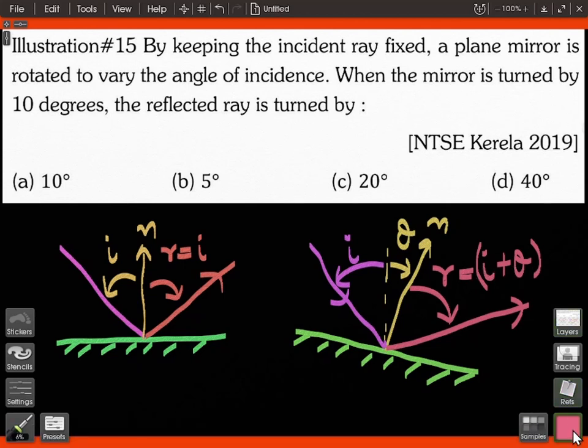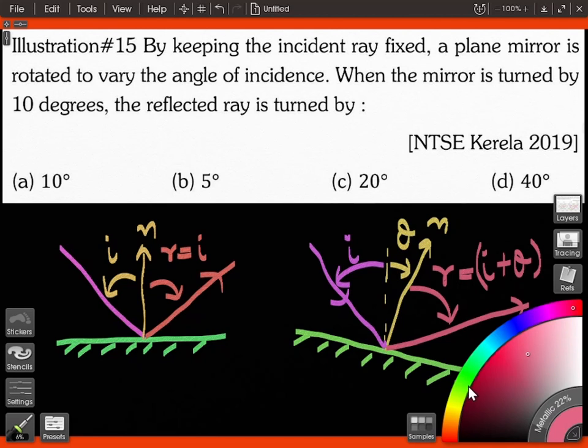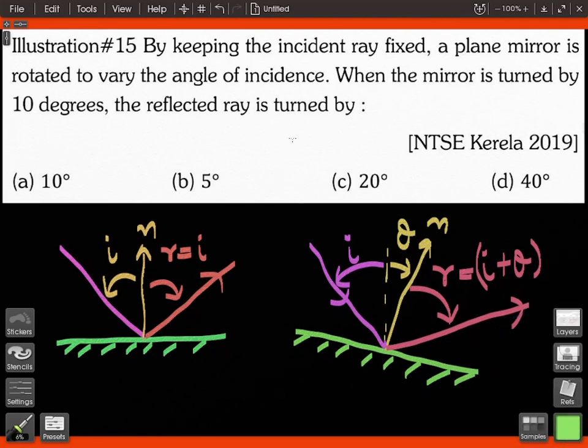So you can see the new ray has come out at an angle r equal to i plus theta. If you look at the net deviation, or how much the reflected ray has turned, if we compare with respect to the old reflected ray...